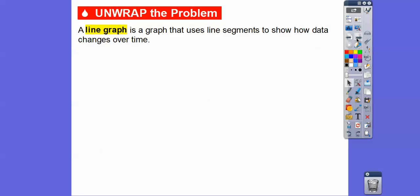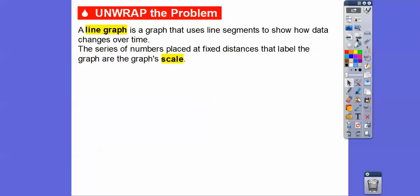So what a line graph is, it's a graph that uses line segments to show how data changes over time. We'll do a couple of them. The series of numbers placed at fixed distances that label the graph are the graph's scale. And the intervals, or the difference between the values on the scale, should be equal. So here's an example right here.